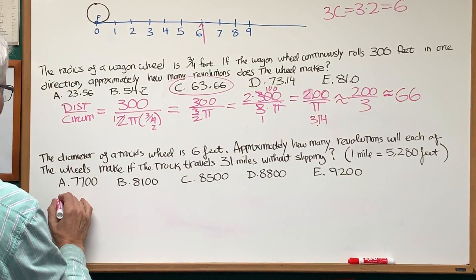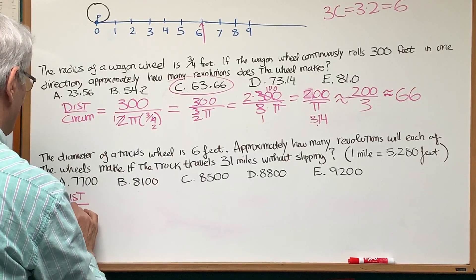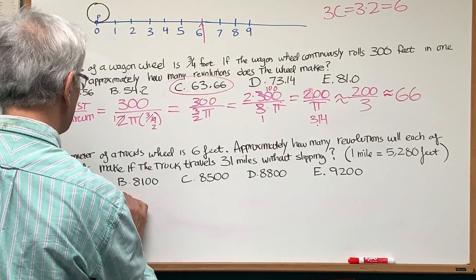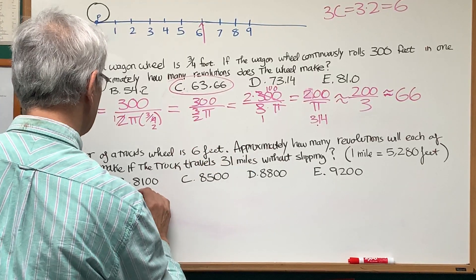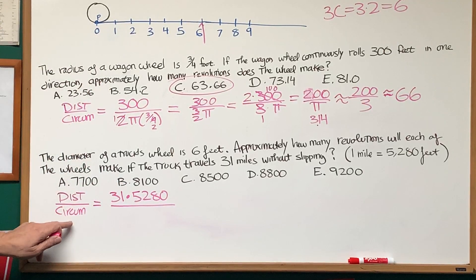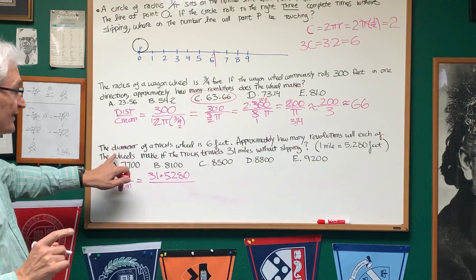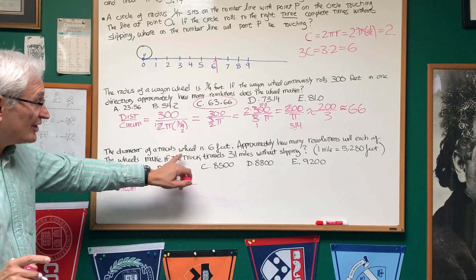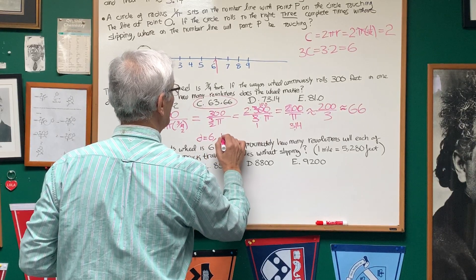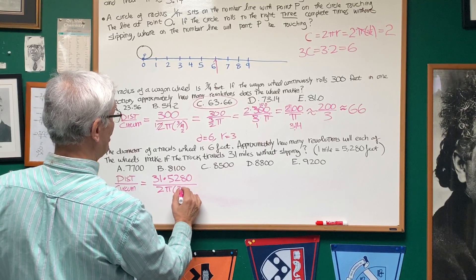So once again, we're looking at the distance that the truck travels divided by the circumference of one of its wheels. The distance that the truck travels is 31 miles times 5,280 feet per mile. And the circumference is going to be 2πr. Now, this is a little trick. Instead of giving us the radius of the wheel, we are told the diameter. So if the diameter is 6, then the radius is 3. So I have 2π times 3.